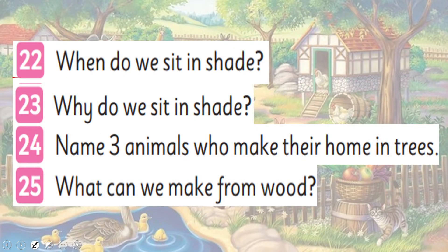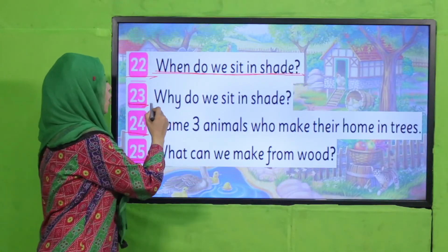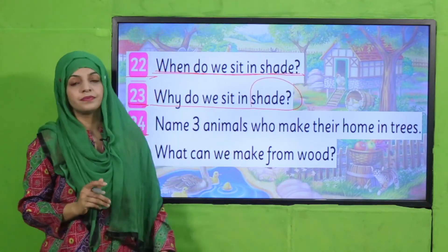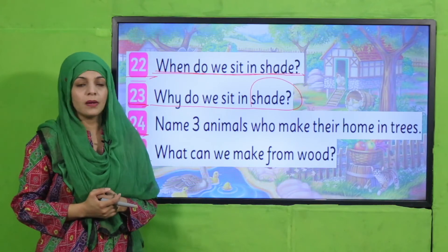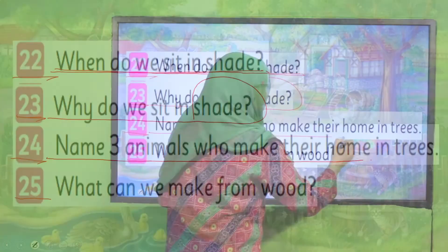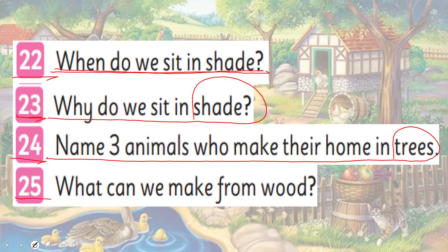Answer from your Listening and Speaking pages 22 to 25. When do we sit in shade? Hum saaye mein kab baithte hain? When it is hot, in summers. Very good! Number 23: Why do we sit in shade? To keep ourselves cool. Name three animals who make their home in trees. Birds, insects — they make their homes in trees. What can we make from wood? We make furniture. Very good!